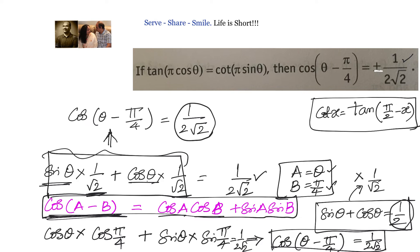Let's have a recap of this problem. We were given that tan of π cosθ equals cot of π sinθ, and we had to prove that cos of θ minus π/4 equals 1 by 2√2. Using cot x equals tan of π/2 minus x, we rewrote cot of π sinθ as tan of π/2 minus π sinθ, then removed tan from both sides to get π cosθ equals π/2 minus π sinθ. Taking π out gives sinθ plus cosθ equals 1/2. Multiplying both sides by 1/√2, we got cosθ cos(π/4) plus sinθ sin(π/4) equals 1 by 2√2, which equals cos of θ minus π/4 equals 1 by 2√2.